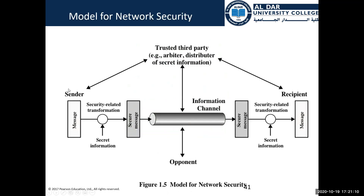This is the model for network security. A sender wants to send a message to a recipient through an insecure channel. You add a security functionality to secure the message before sending it through the channel. The message goes through the channel in a secure way and arrives at the recipient, who applies the inverse functionality. For example, the sender applies encryption and the recipient applies decryption, transforming the secure message format back into a readable message.